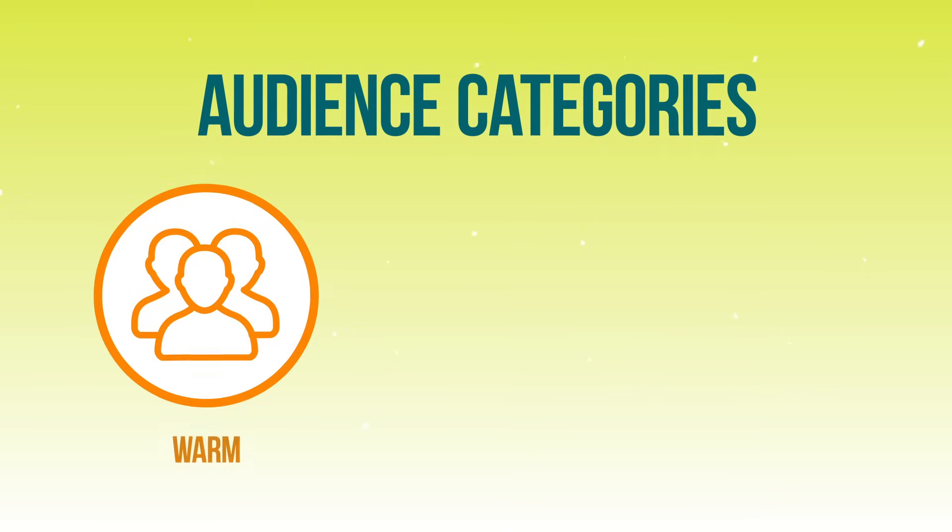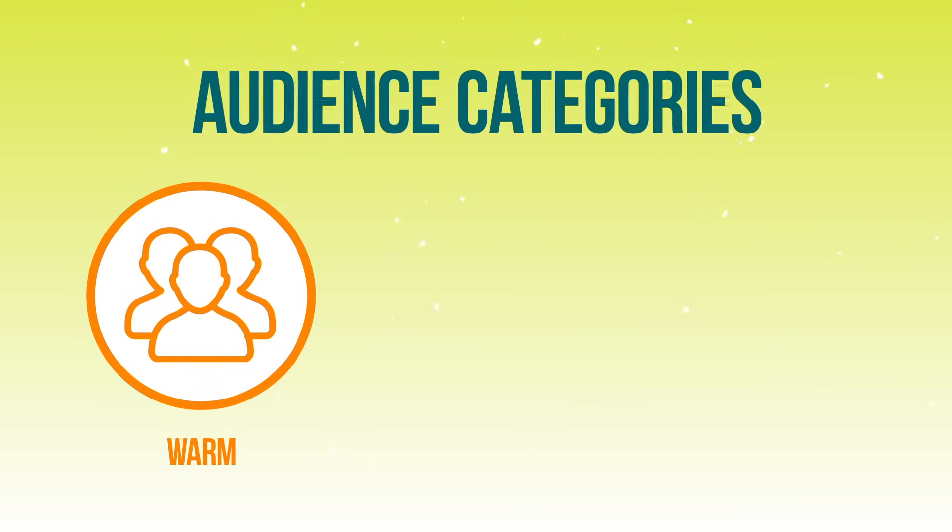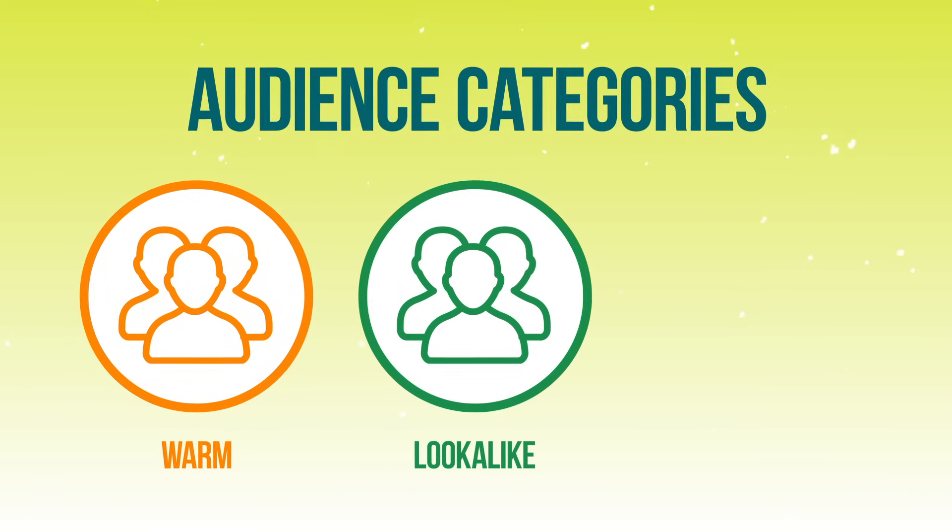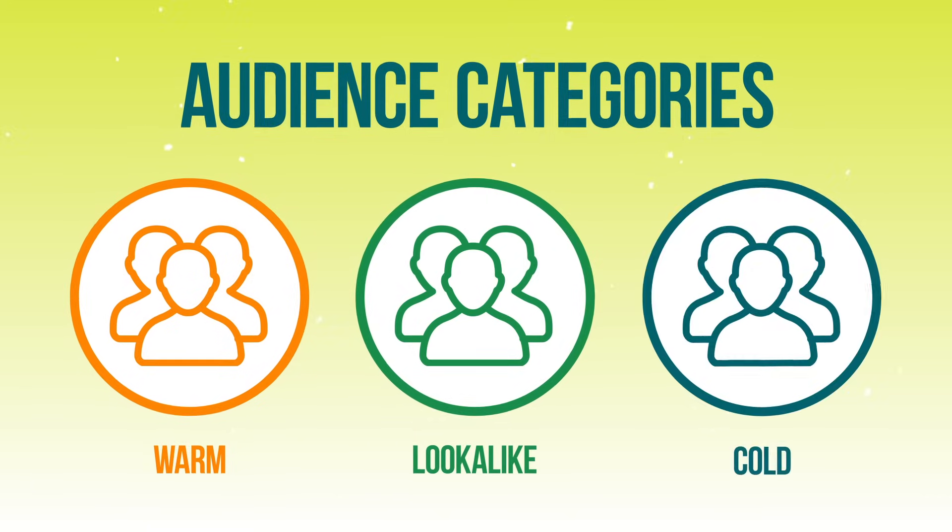I recommend that you start with the warmest audiences first. The second type of audience to prioritize is the lookalike audience. The third priority is cold audiences. If you don't have any warm audiences, no worries — you can start right off with cold audiences. But if you do have warm audiences, start there, create lookalike audiences from those warm audiences, and then also include some cold targeting audiences like we talked about today. That's the fundamentals that will get you results in reaching your exact target audience on Facebook through cold audience targeting.